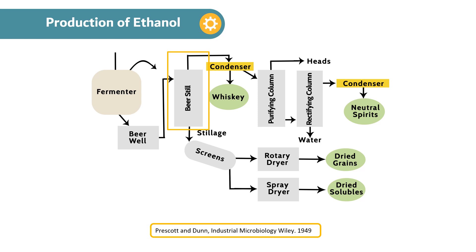The more volatile heads are removed in the purifying column, which represents the step of isolation of product. The final purification and polishing are obtained by removing the more volatile ethanol from its remaining contaminant, water, in the rectifying unit.